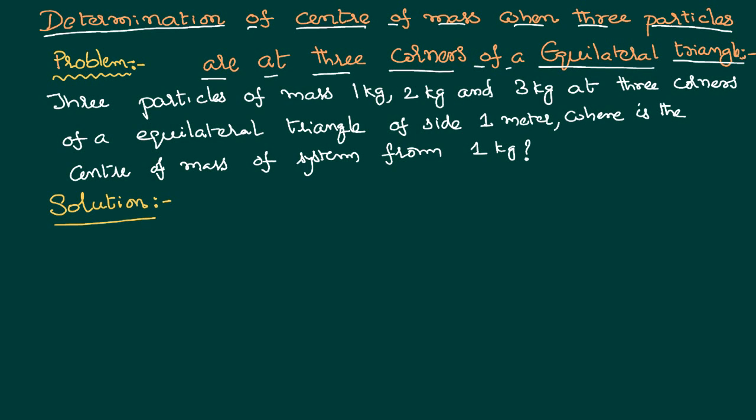Here in this problem, we would like to calculate the center of mass of a system where the system consists of 3 particles, each particle having a mass of 1 kg, 2 kg and 3 kg.